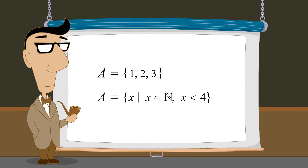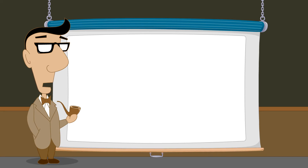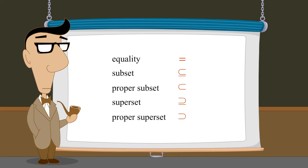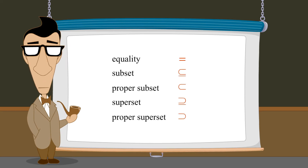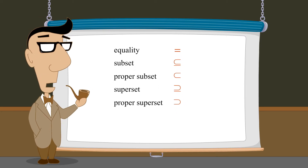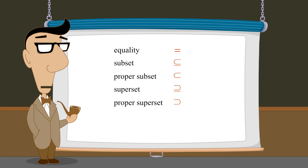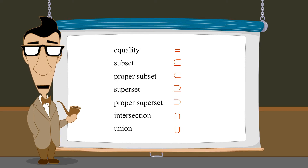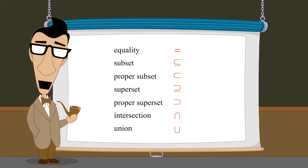We also described several types of relations that can exist between sets. In this lecture, we will describe several operations which can be performed on sets such as intersections and unions, and see how these relations and operations can be visualized graphically by using what is called a Venn diagram.